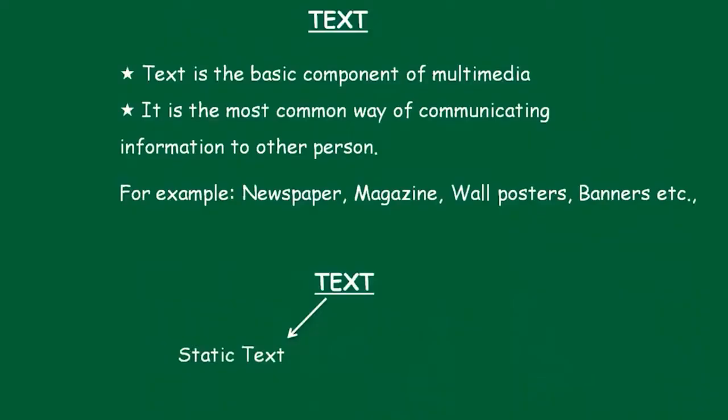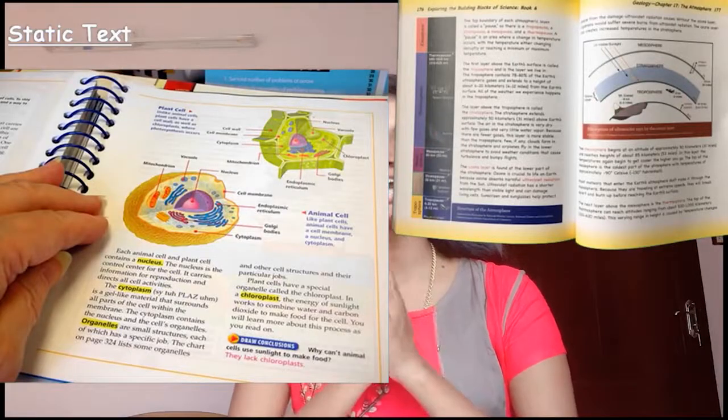Next, we are going to see the first component briefly — the text component, which is the basic component. We have two types: static text and hypertext. Static text means a normal text headline or something you see in a book. Hypertext means it is a link — you would have seen it when someone shares a video link, written in blue color with underline. That is a hypertext.